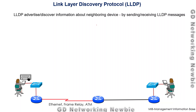In this video we are going to discuss Link Layer Discovery Protocol, or LLDP. LLDP advertises and discovers information about neighboring devices. If we focus on this network, if we enable LLDP on this router, it will start sending information about itself. It will send and receive messages, advertising information about itself and receiving information from its neighbors.